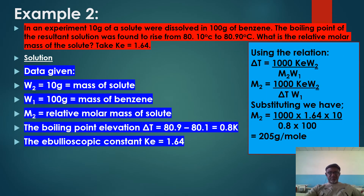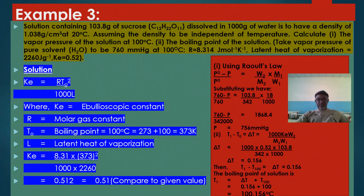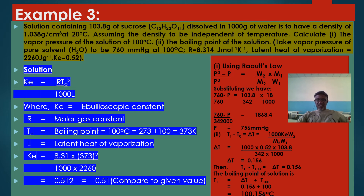We have worked examples where all the given values are specified. We substitute and are able to get M₂, illustrating the boiling point elevation. In one example, k_e is given, and in another, we calculate k_e using equation 7. Although k_e was given as 0.52, we calculated our k_e as 0.51, which is approximately the same. For the first question, we used Raoult's Law — relative lowering of vapor pressure — to calculate the vapor pressure of the solution. For the second, we used elevation of boiling point to calculate the boiling point of the solution.